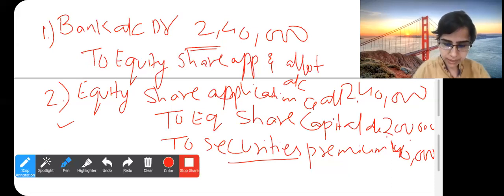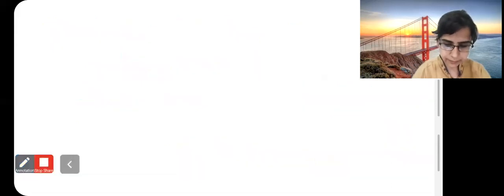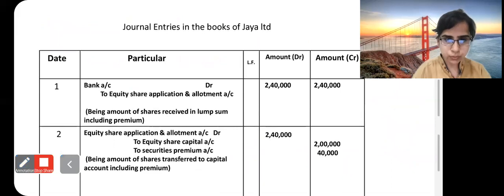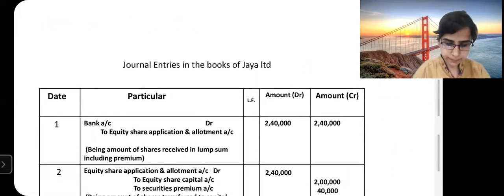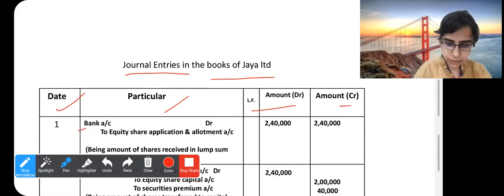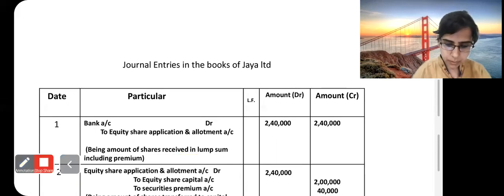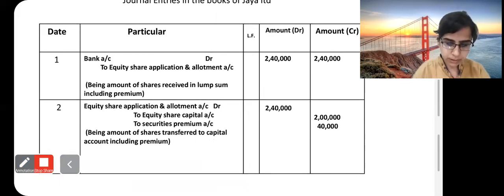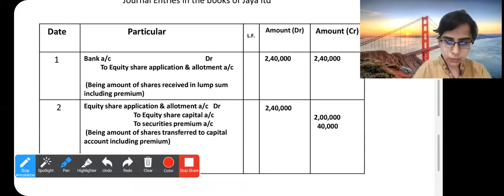Now we will see the entries in the systematic manner. We have to maintain the proper format. Journal entries in the books of Jaya Limited with columns: date, particular, ledger folio, amount debit, and credit. The first entry: Bank Account debit to Equity Share Application and Allotment Account. 2,40,000 is debited and credited. Narration: Being amount of share received in Lumpsum and it is including premium.